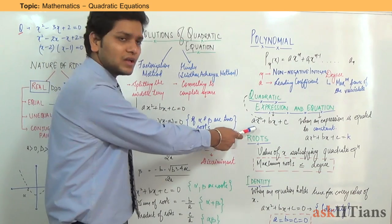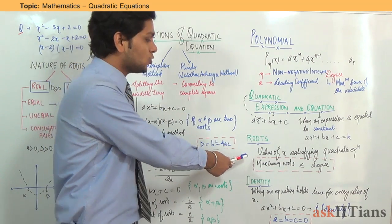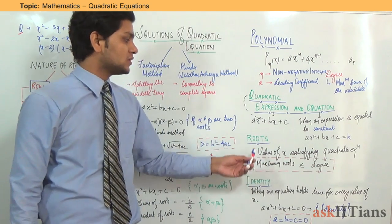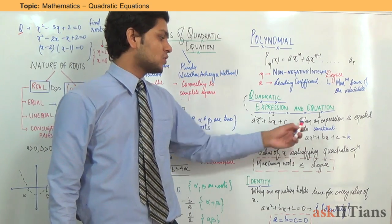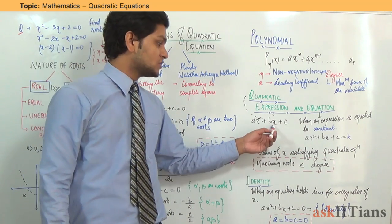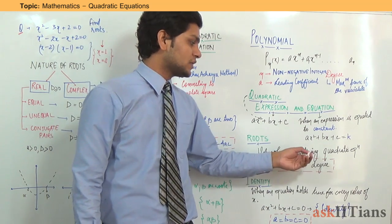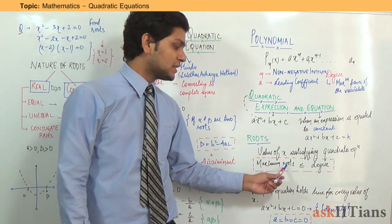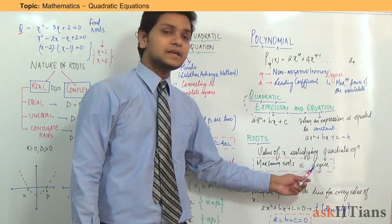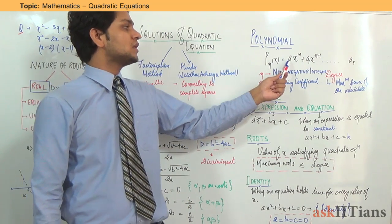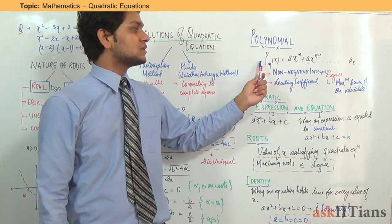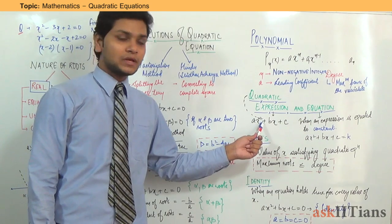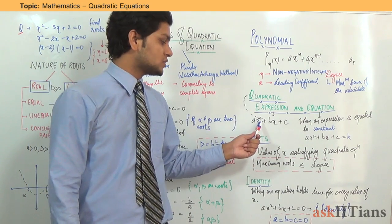Now come to the roots. If we have an equation, then we must have roots of that equation. Roots are defined as the values of x satisfying the quadratic equation. If this is our quadratic equation equated to some constant k, then there will be certain values of x which satisfy this equation — those values of x are called roots. One important fact: the maximum number of roots a polynomial can have is always equal to or less than its degree. So a quadratic equation will have at most 2 roots.